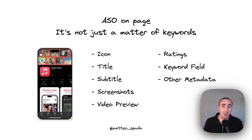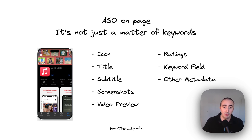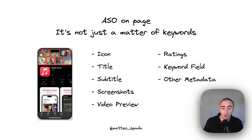When we talk about ASO, we need to talk about on-page and off-page App Store Optimization. For on-page ASO, I'm talking about icons, titles, screenshots, video preview, ratings, keyword field, and so on — basically everything that the user can find on the App Store page.